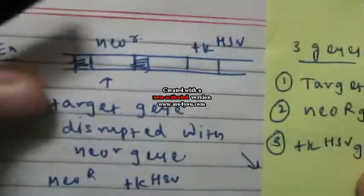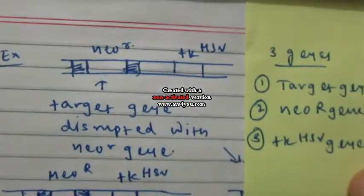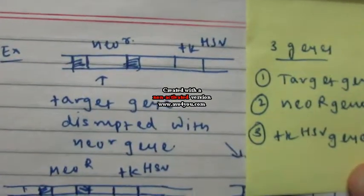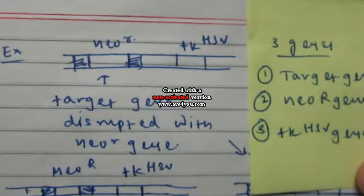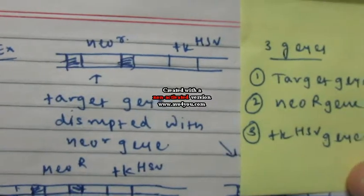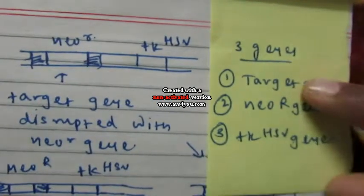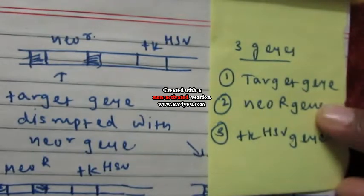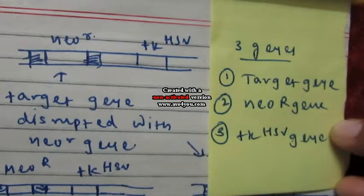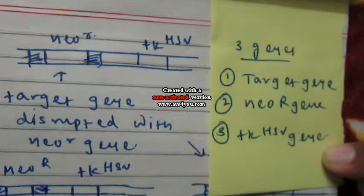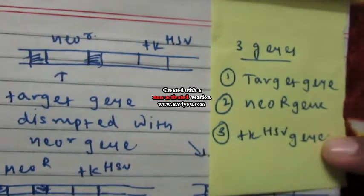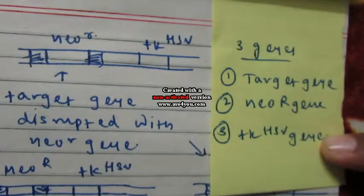As an example, mouse embryonic stem cells contain three genes: the first is the target gene, the second is the neomycin resistance gene, and the third is the TK gene, which stands for thymidine kinase gene. This TK gene is taken from the herpes simplex virus.